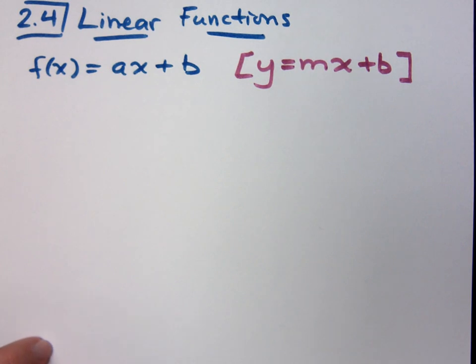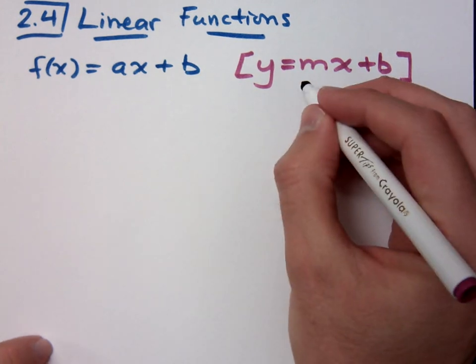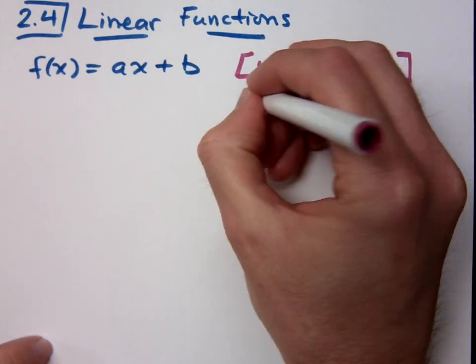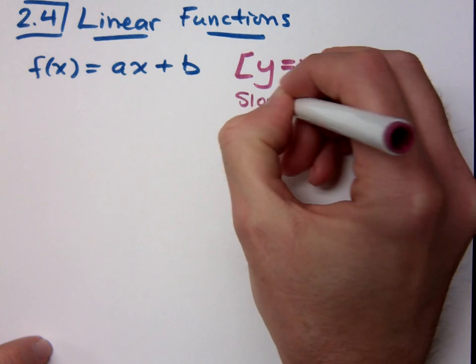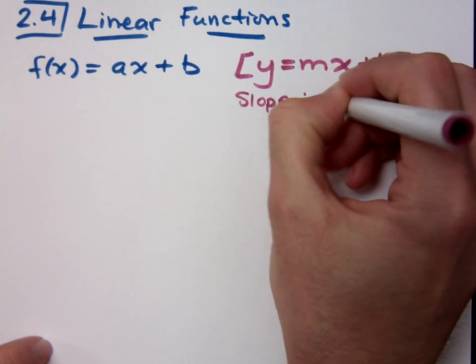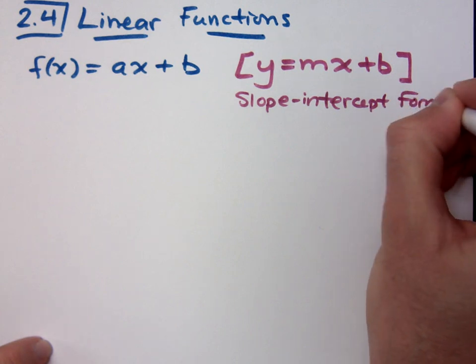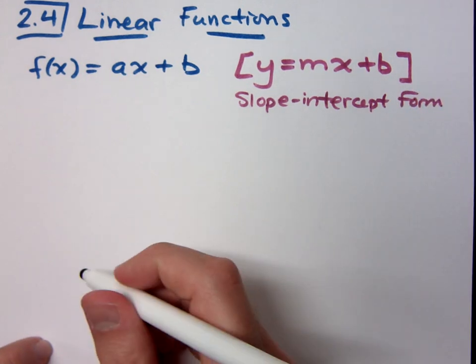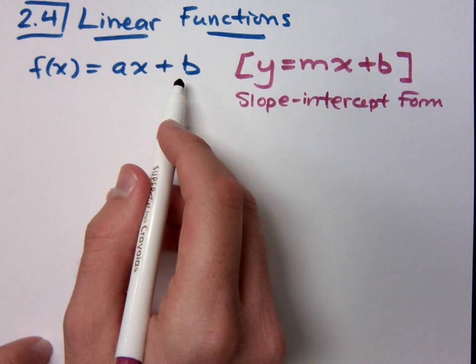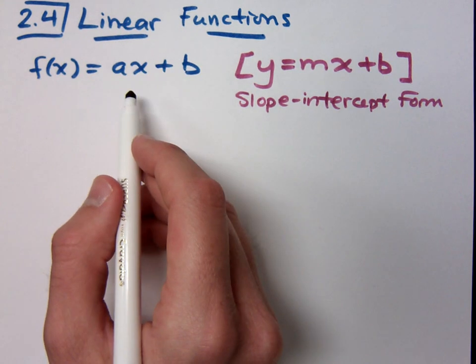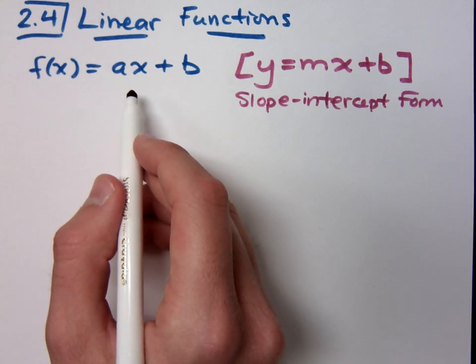Remember how cool that was? What was the name for this? Slope-intercept form. It's the same thing as what we have here, but they're using this notation for our function so that you become familiar with it and so that it does not scare you or frighten you later.